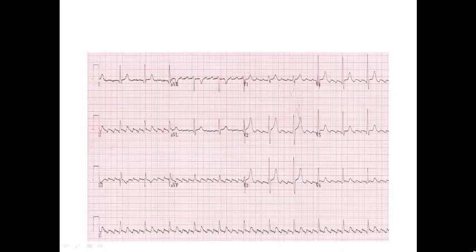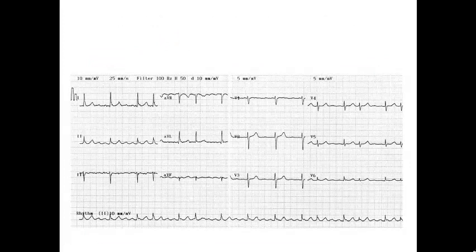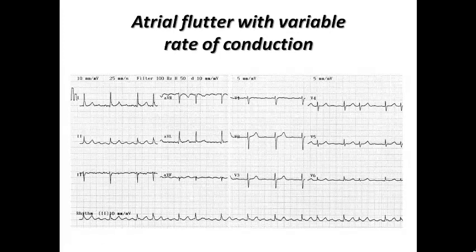In another ECG example, there are approximately 4 flutter waves between each two complexes — atrial flutter with 4:1 conduction. The flutter waves are negative in inferior leads and positive in V1, confirming typical counterclockwise atrial flutter with 4:1 AV conduction. There is also a pattern with irregular rhythm but flutter waves of fixed morphology between complexes, representing atrial flutter with variable rate of conduction — reminding us that irregular narrow complex tachycardia can be atrial fibrillation or atrial flutter with variable conduction.